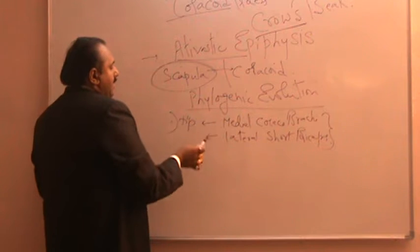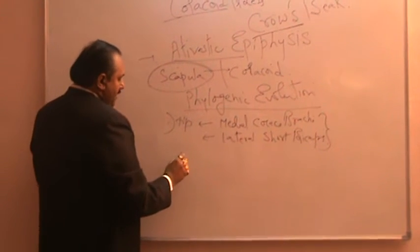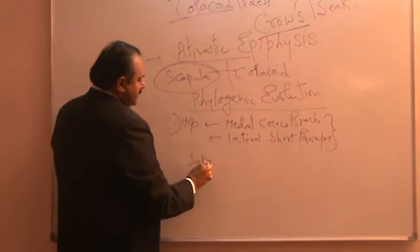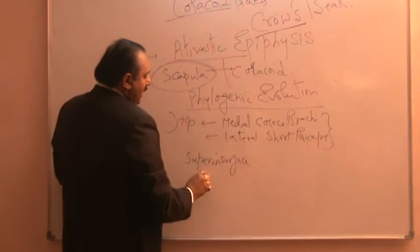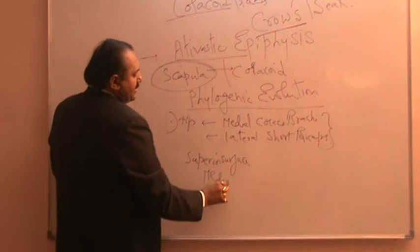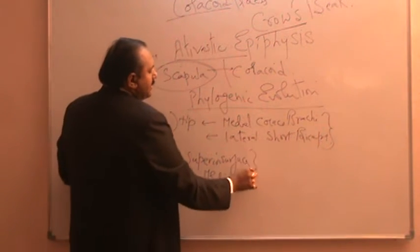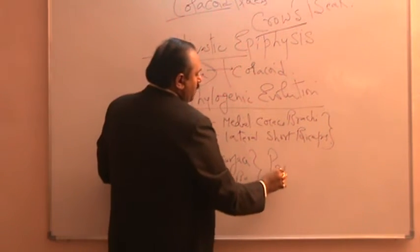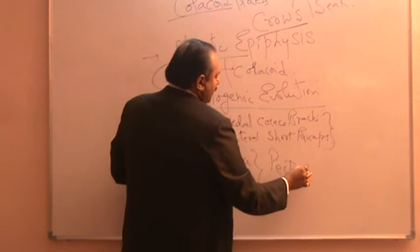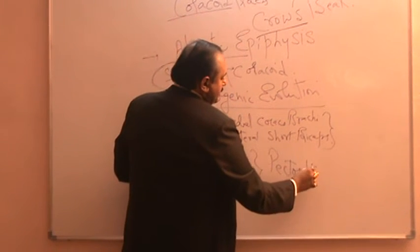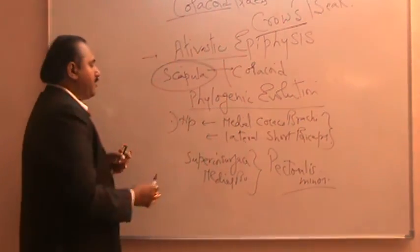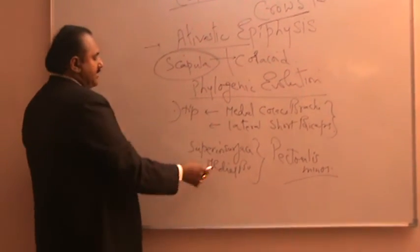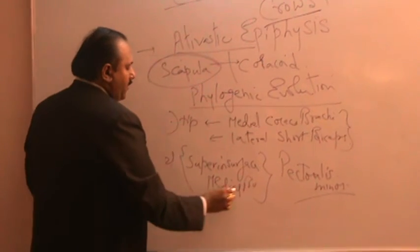And if you take the superior surface, the superior surface and the medial border, they are giving insertion to pectoralis minor. This is the pectoralis minor which is getting its insertion into the coracoid process. And that is the superior surface and the medial border of it.